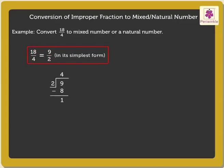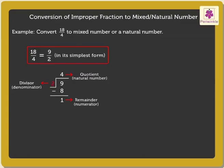Now, we divide 9 by 2 to get the quotient as 4, which is written as the natural number, and the remainder as 1, which becomes the numerator of the proper fraction. The denominator will be the same denominator of the given improper fraction, which is 2 here.